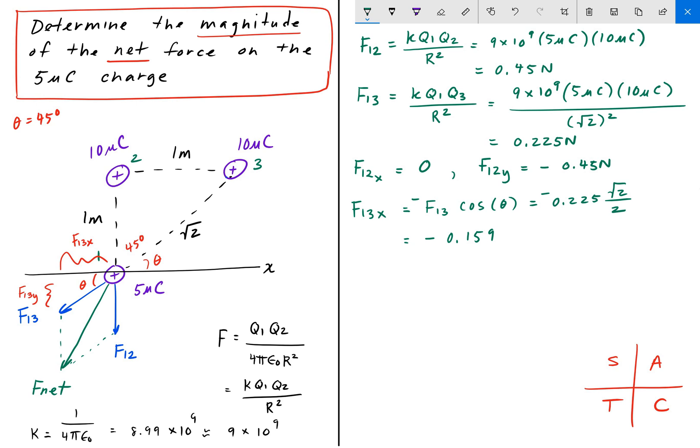And we can do that the same thing for the y component, only this time, instead of cosine theta, we use sine theta. So F13 sine theta is equal to, same thing, negative 0.225 square root of 2 over 2. And so it's the same thing. Negative 0.159.